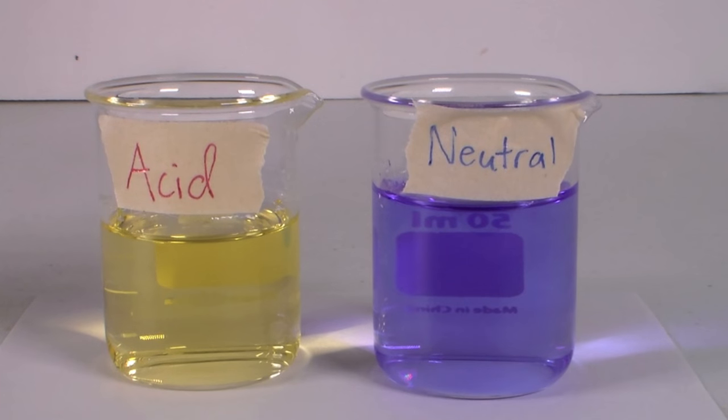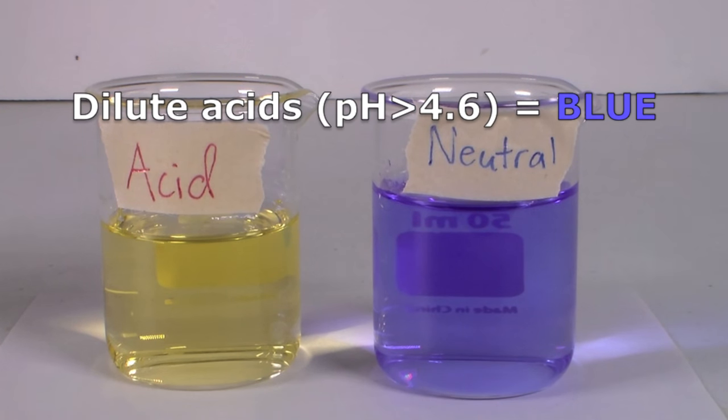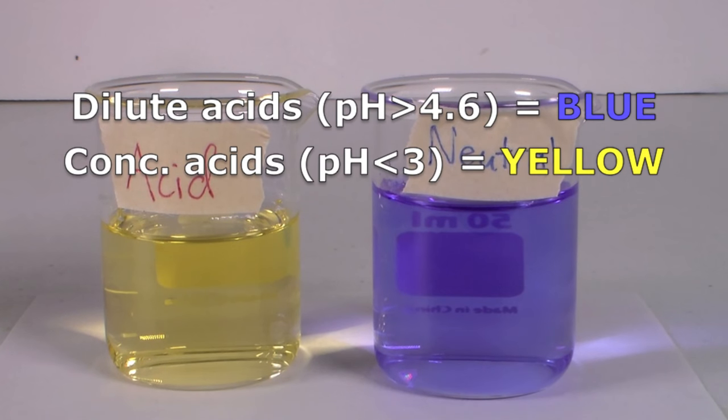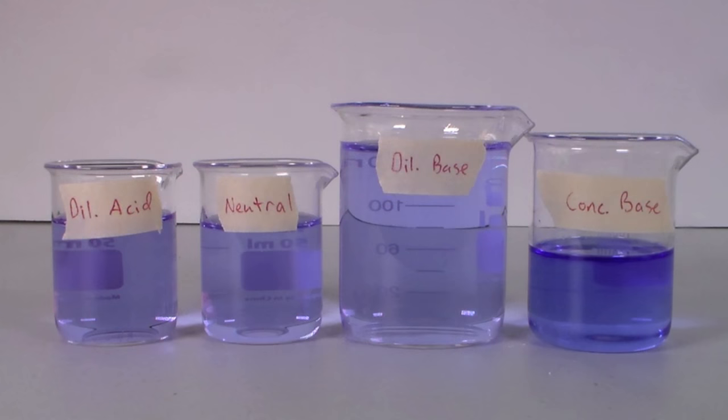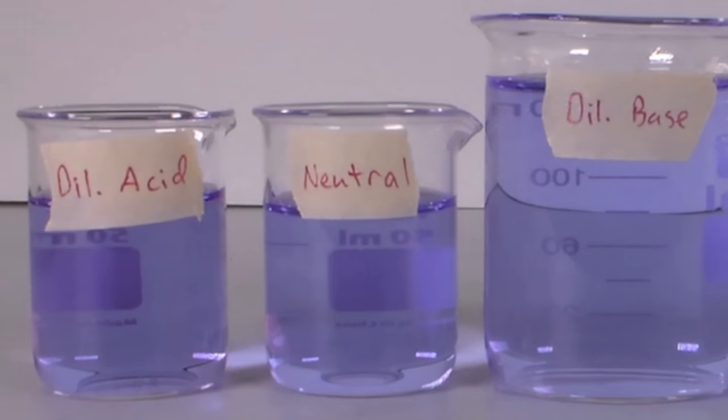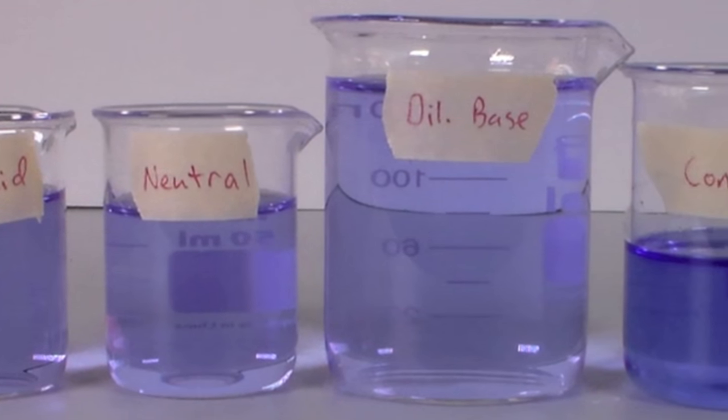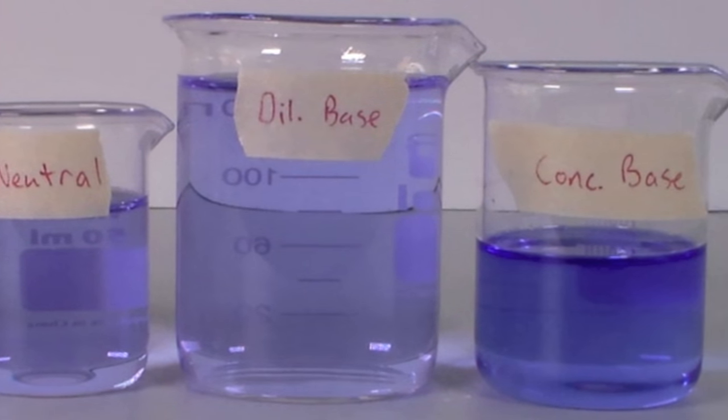Because of its pH range bromophenol blue is great for distinguishing between different concentrations of acids. If you are working with a dilute acid that has a pH above 4.6 it will turn blue. But with a more concentrated acid that has a pH below three it will turn yellow. However it's not great for distinguishing between dilute acids and bases because it will be blue for all pH values above 4.6.